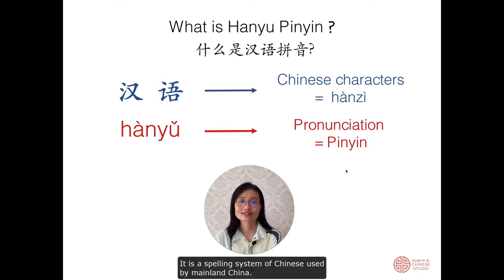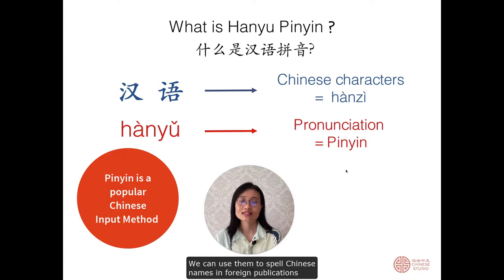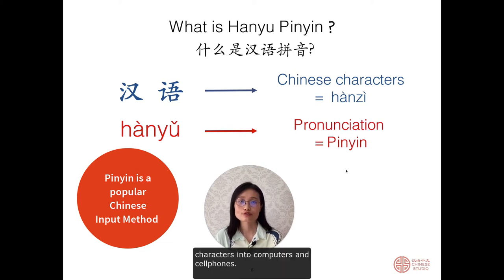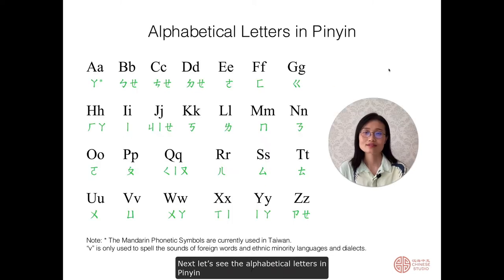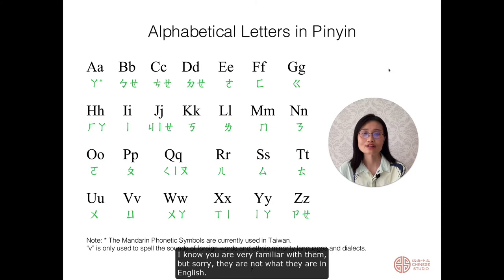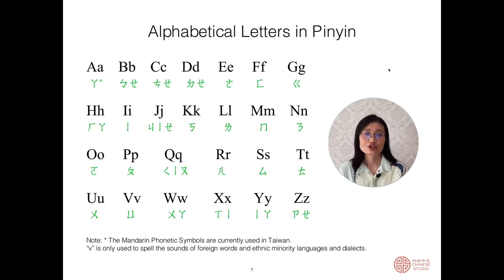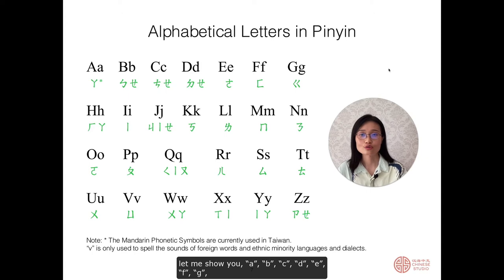Pinyin is a spelling system of Chinese used by mainland China. We can use it to spell Chinese names in foreign publications, or we can use it as the input method to type characters into computers and cell phones. Next, let's see the alphabetical letters in pinyin. I know you are very familiar with them, but they are not what they are in English.